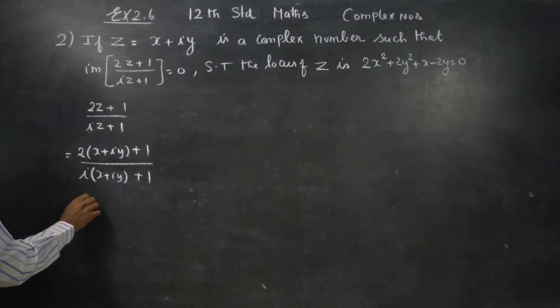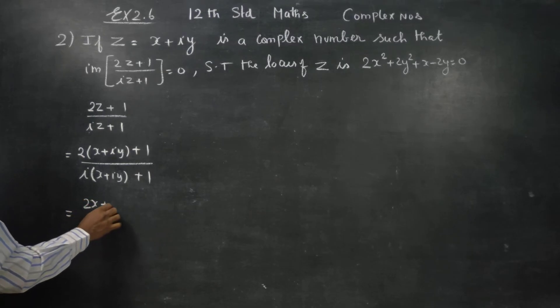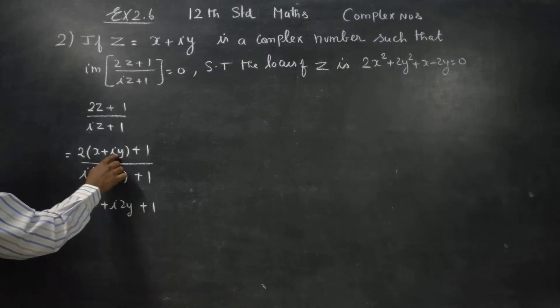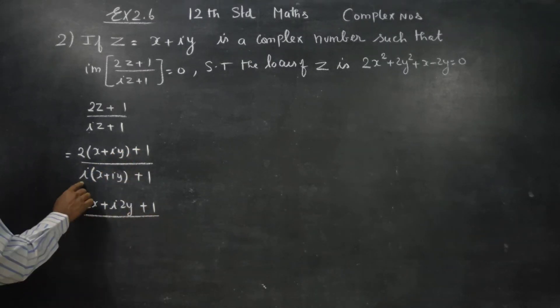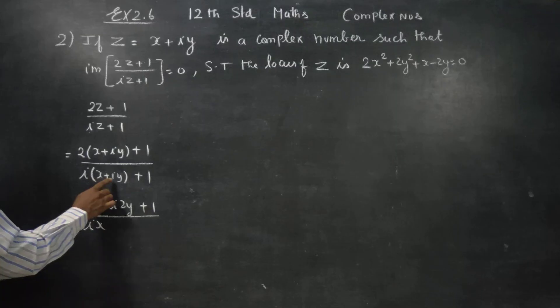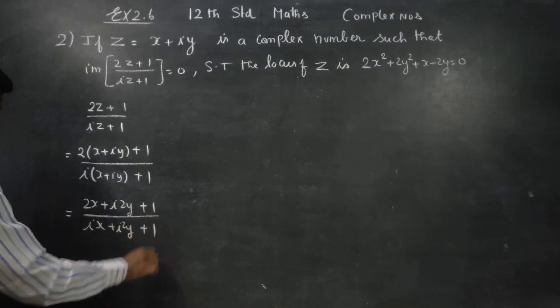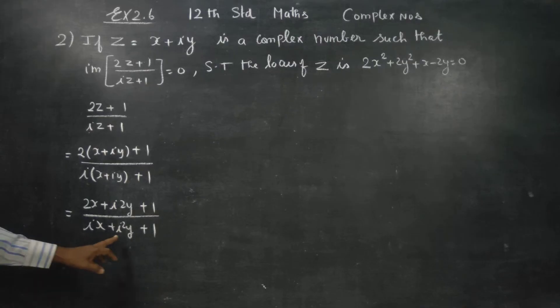2 multiply 2x plus i into 2y plus 1. 2 this is i square y plus 1. What is i square minus 1? i square is minus 1.